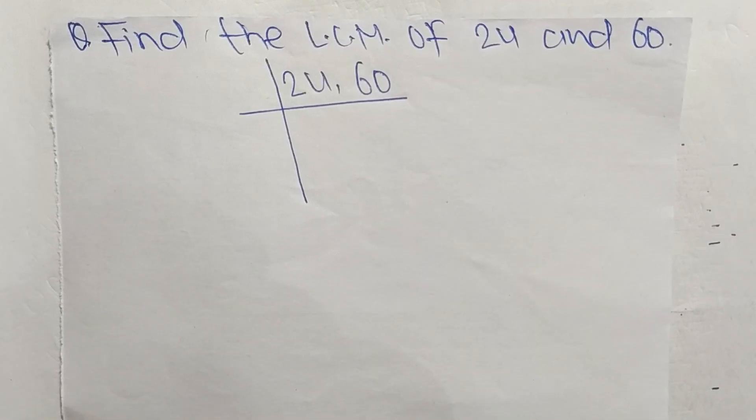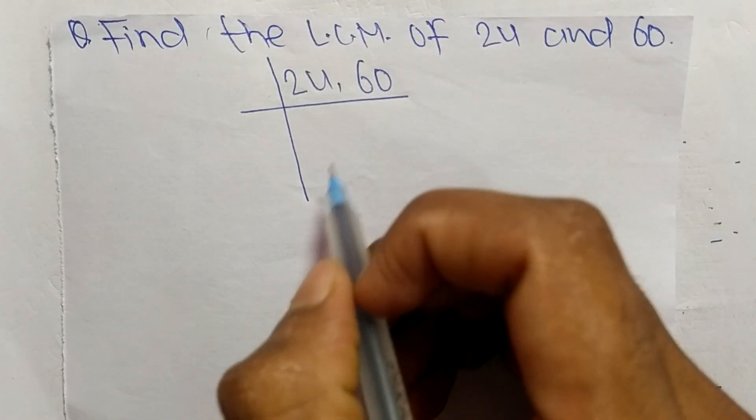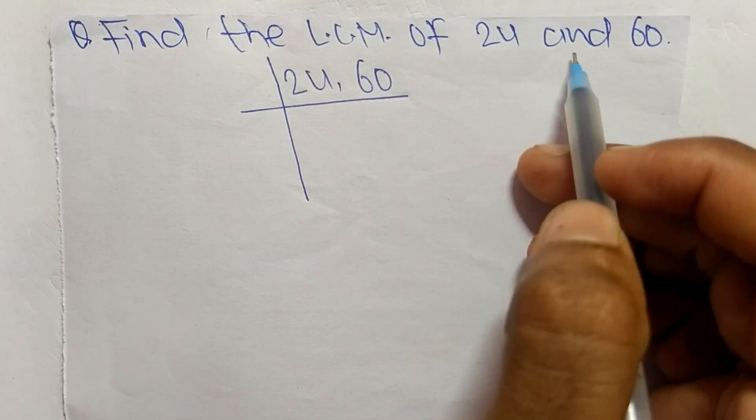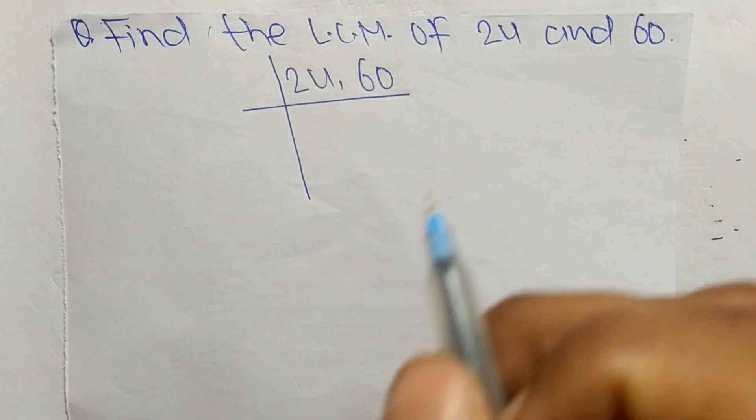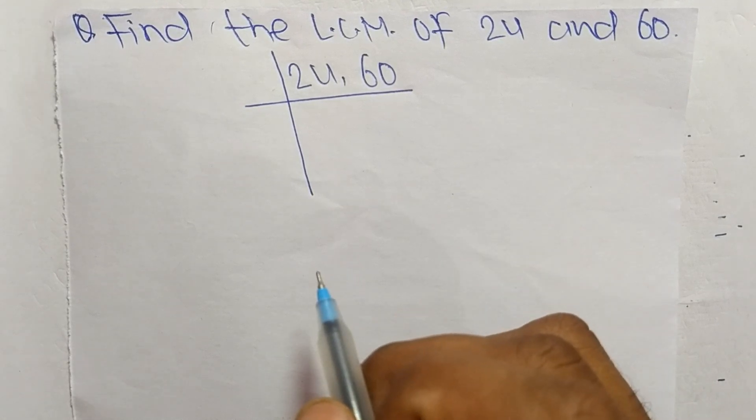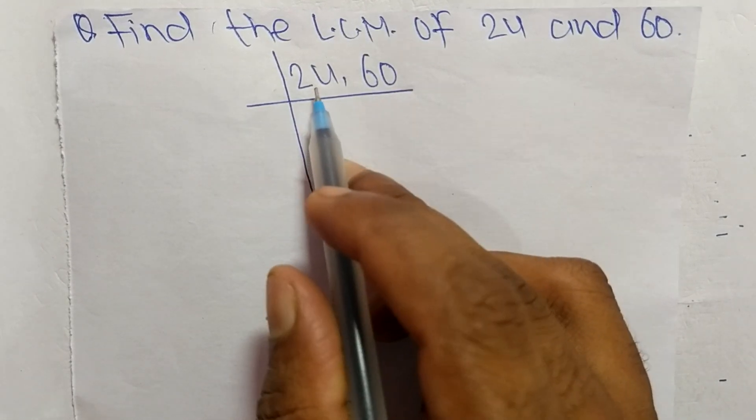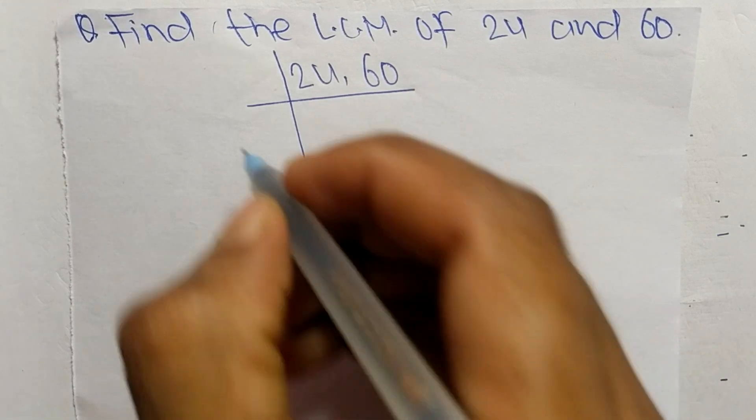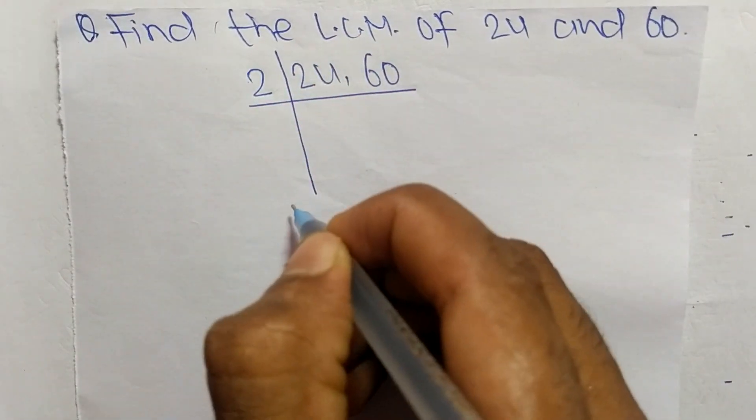So today in this video we shall learn to find the LCM of 24 and 60. To find LCM, first of all we choose the lowest number that can exactly divide 24 and 60, so the number is 2.